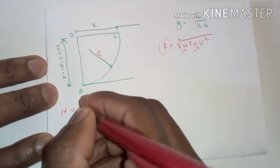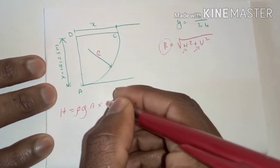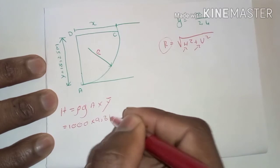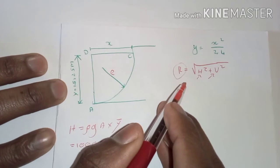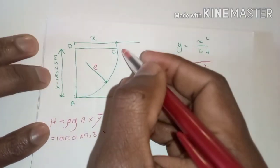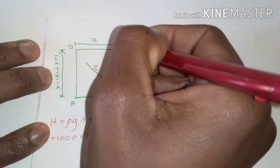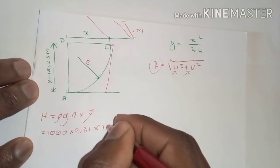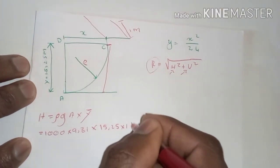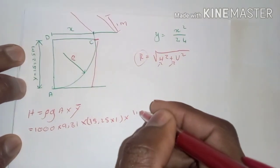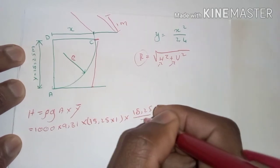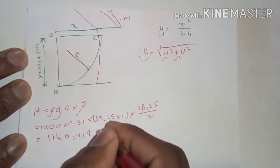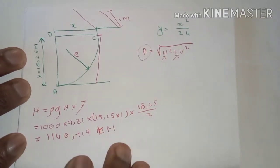Starting with the horizontal component H = ρgAȳ: ρ = 1000 kg/m³, g = 9.81 m/s², the area is 15.25 times 1 (unit breadth), and ȳ equals 15.25 divided by 2. Substituting these values gives H = 1140.719 kilonewtons.